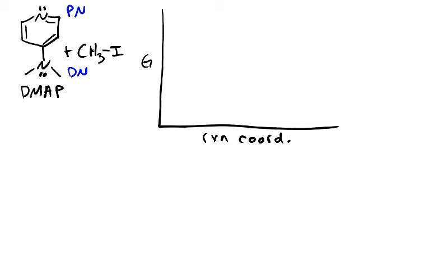Since we have these two nucleophilic sites in DMAP, the PN and DN sites, we can consider these two distinctly different starting materials: a PN starting material and the DN starting material. Let's go ahead and start with the DN. We'll put this in green and give it an energy arbitrarily right here.